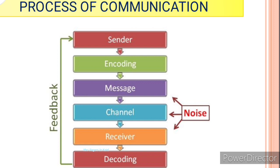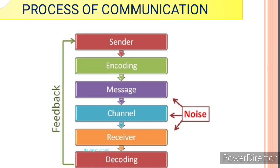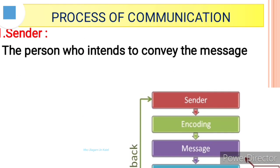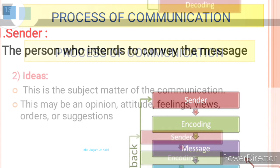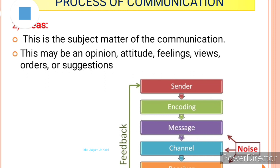The first step in the process of communication is the sender. The sender is the person who intends to convey the message — who passes information and ideas to others, also known as the communicator. The second step is the idea, which is the subject matter of communication. It may be an opinion, attitude, feelings, views, orders, or suggestions.